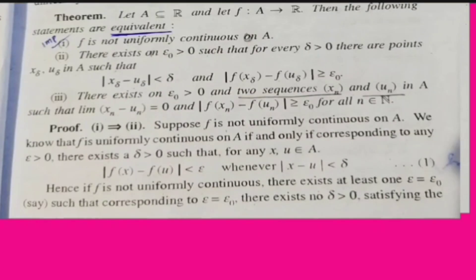First one, second one — prove. F1 is uniformly continuous. F1 is uniformly continuous, but condition 1 — we have two delta greater than 0.